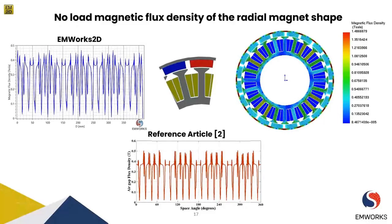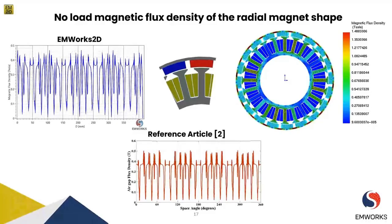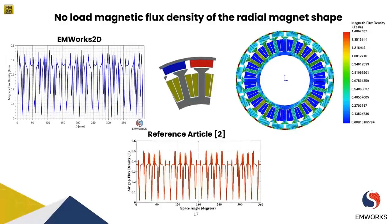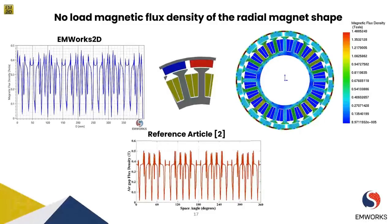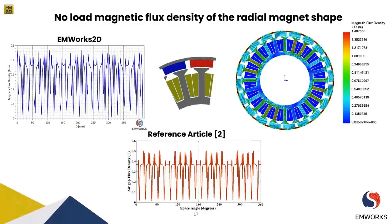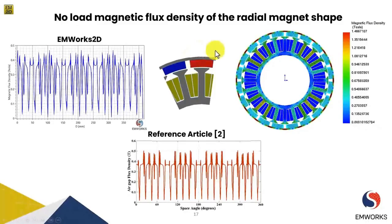Some peak values in our EMF study do not exactly match the article, due to differences in the material library approximation and meshing, which leads to such differences in results. Using magnetic flux density, the user can understand the flux path and identify which parts of the motor are saturating, allowing adjustment of motor diameter, stator tooth thickness, and back iron core accordingly. The maximum flux density is around the rotor core at approximately 1.48 tesla, while the stator teeth are well within the limit.